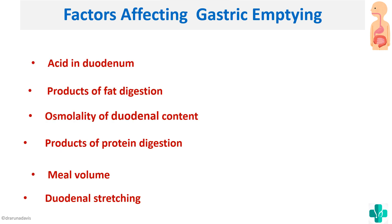In summary, there are six factors that affect gastric emptying: acid in the duodenum, products of fat digestion, osmolality of duodenal content, products of protein digestion, meal volume, and duodenal stretching.